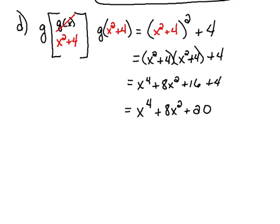There's our composition function. Now for the domain. This composition function is a polynomial, so our domain would be all real numbers. But don't forget to check the inside function. Again, here our inside function is a polynomial, so our domain would be all real numbers.